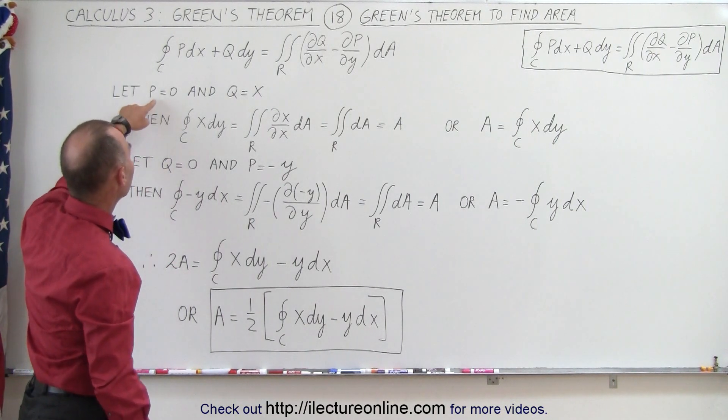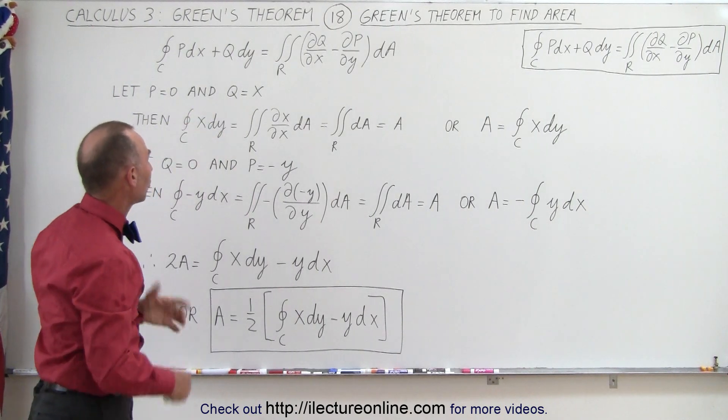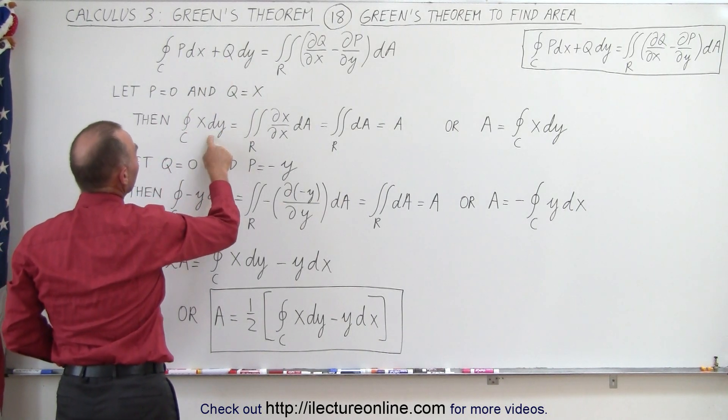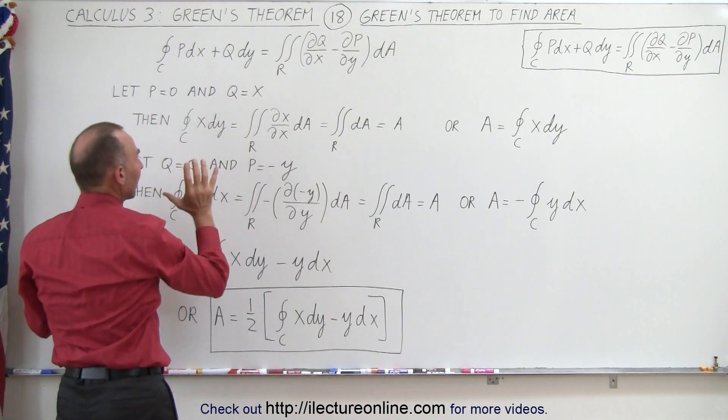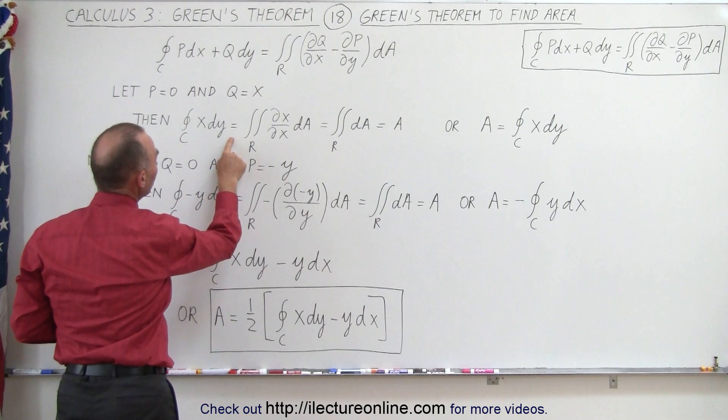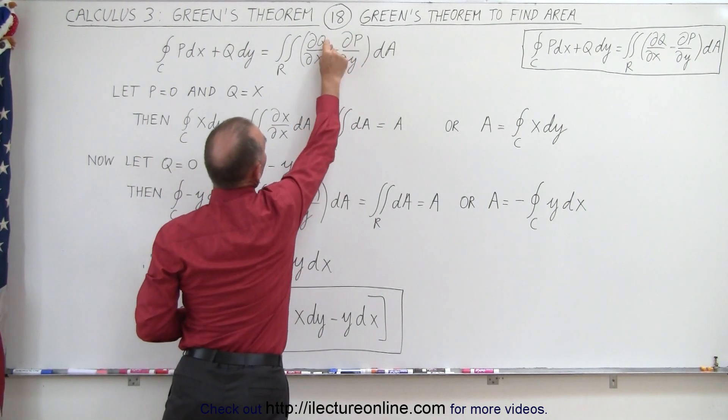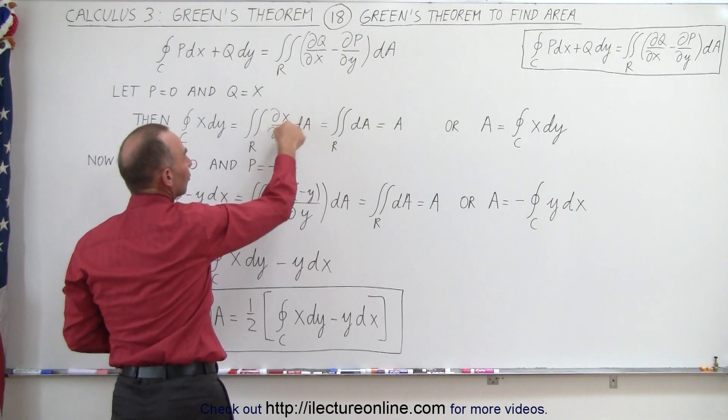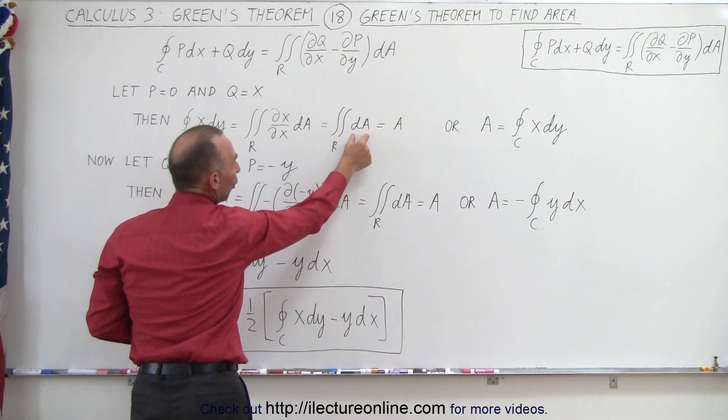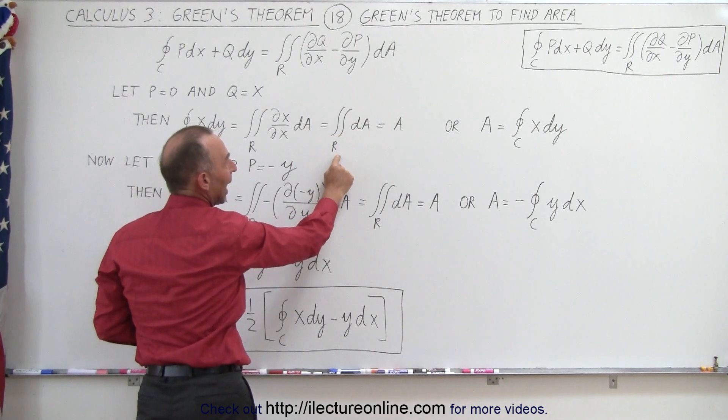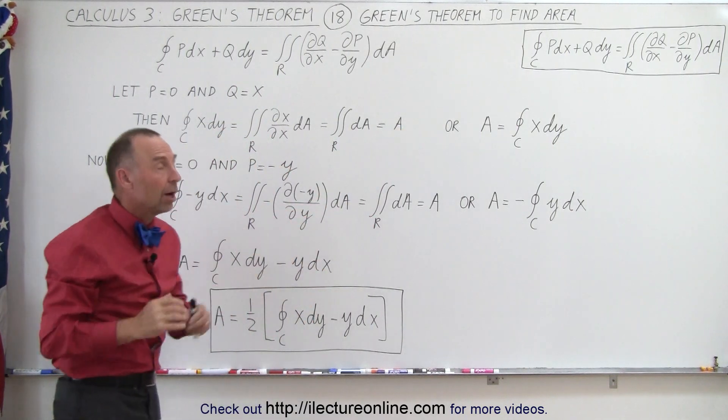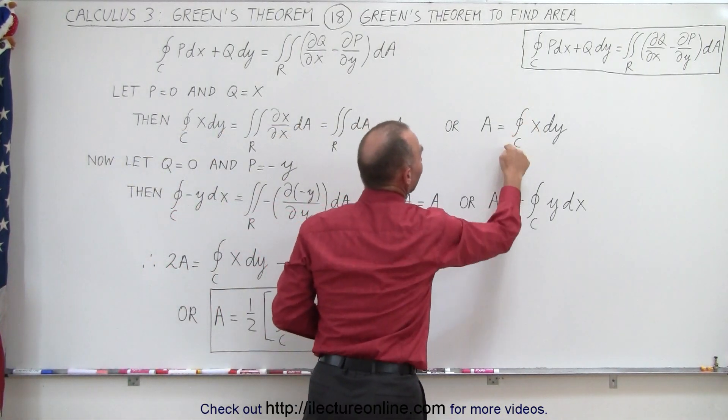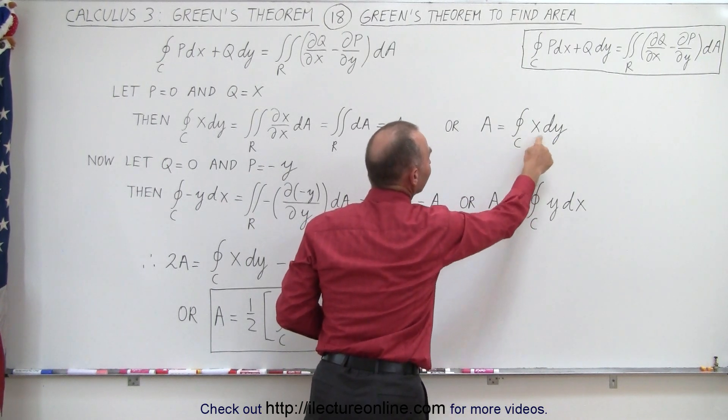Now what if we let p go to 0 and set q equal to x, what happens then? Well then our left side of the equation, this goes to 0 and we end up with x dy. We're going to do a line integral of x dy along whatever that path was and that will then be equal to, notice since p goes to 0 this term goes to 0, and since q is equal to x we get the partial of x with respect to x times dA. Of course this quantity here is equal to 1 which simply means that it's equal to the double integral over the area that's enclosed by the path, which is simply equal to the area of that path, and that means that the area can be expressed as a line integral along the complete path of x times dy.